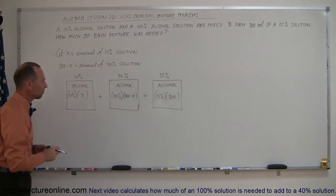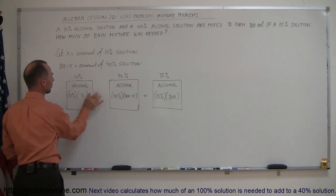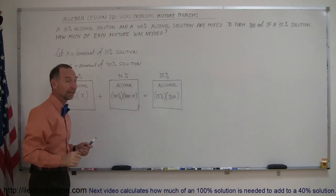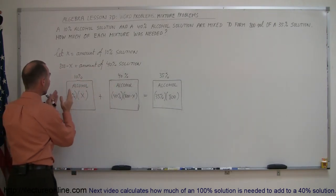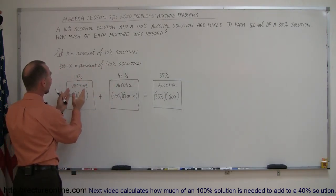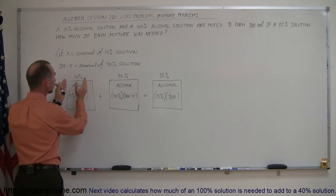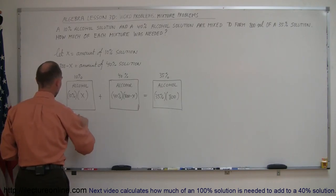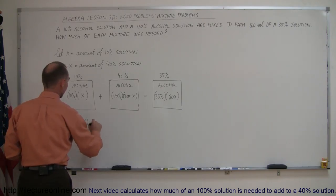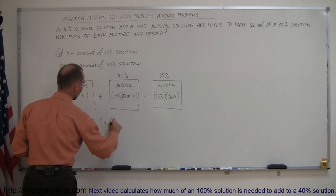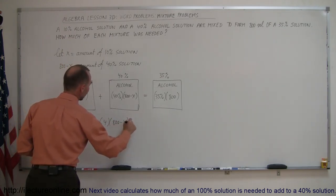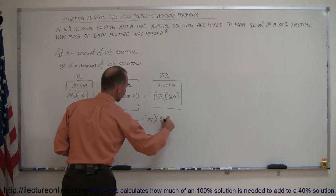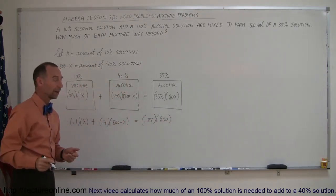The equation is set up so that the alcohol in the 10% solution plus the alcohol in the 40% solution equals the alcohol in the 35% solution. So: 0.1x + 0.4(800 − x) = 0.35 × 800. Now we solve for x.